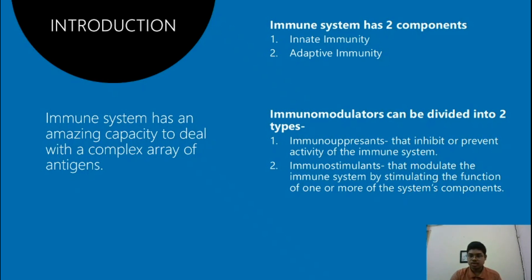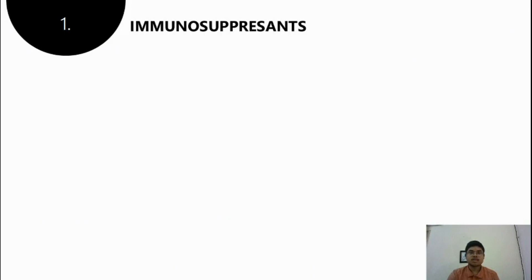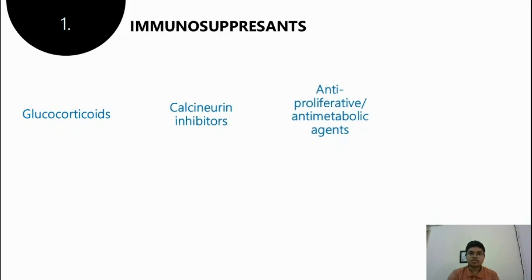Now we come to immunomodulators. Immunomodulators can be divided into two types: immunosuppressants and immunostimulants. Immunosuppressants are those drugs that inhibit or prevent the activity of the immune system. Immunostimulants are those drugs that modulate the immune system by stimulating the function of one or more of the system's components. Most commonly used immunosuppressant drugs are glucocorticoids, calcineurin inhibitors, antiproliferative or antimetabolic agents and antibodies. They are used to control severe manifestations of allergic, autoimmune and transplant related diseases.